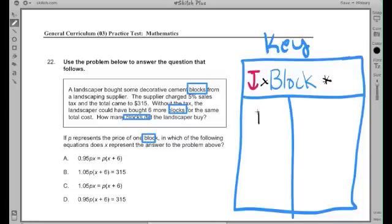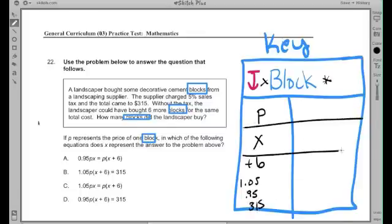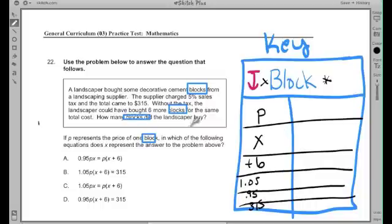I see a p, got to know what the p is. Then I see an x. I'm going to write down all the things that I see down here, so that includes a p and x. I see a plus six, I see 1.05, I see 0.95, and I also see 315. So what do all these things mean?